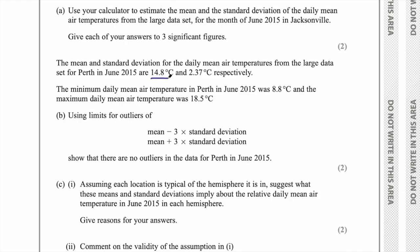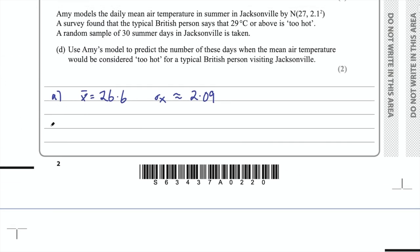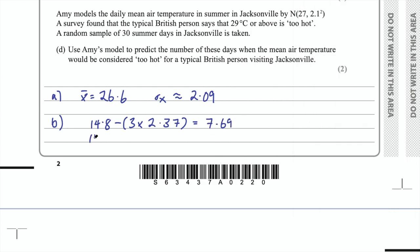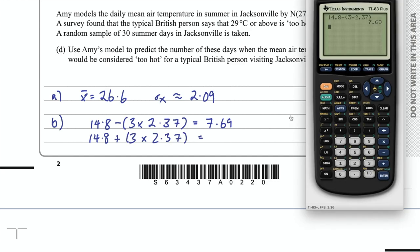The mean was 14.8 and the standard deviation was 2.37. So: 14.8 minus 3 times 2.37 gives 7.69, and 14.8 plus 3 times 2.37 gives 21.91. The min and max are 8.8 and 18.5, which are within those limits. An outlier would be outside 7.69 or 21.91. Both our min and max are within those limits, so there are no outliers.